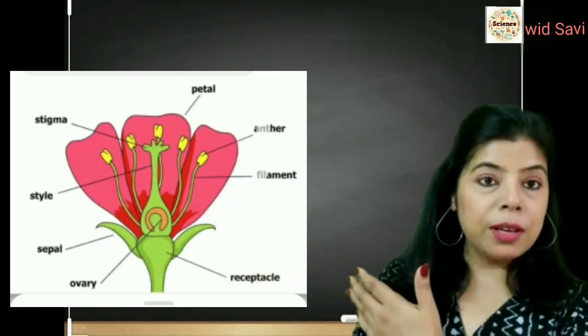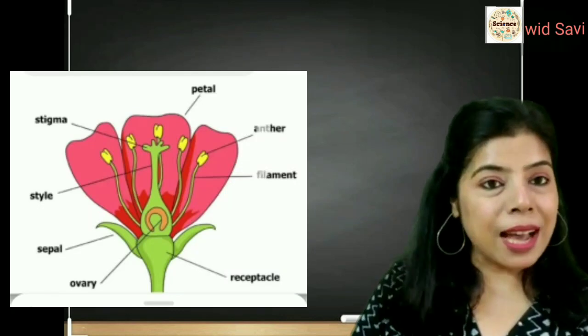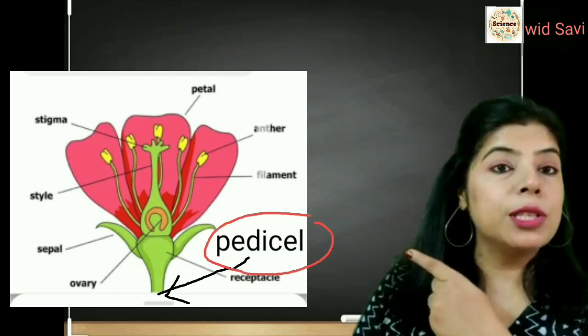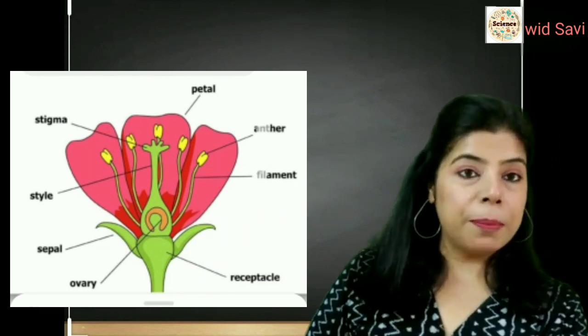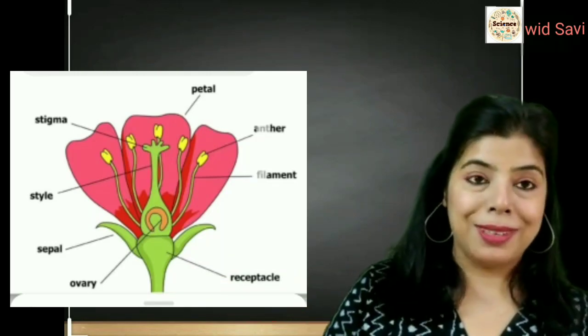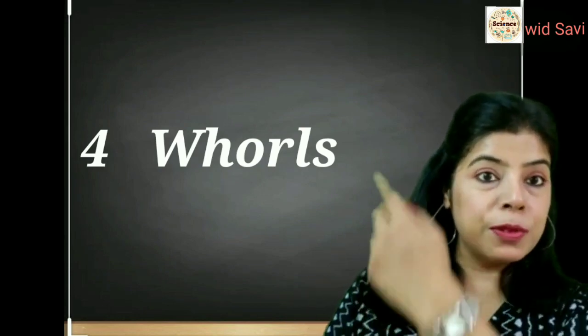Most flowers, like china rose, have the male and female parts in the same flower. For understanding the structure of the flower, I have taken this diagram, which has the male and female reproductive parts in the same flower. The first part of the flower which you see is the pedicel. The pedicel is a small stalk with which the flower is attached. Just above the pedicel, you find the receptacle — it is a swollen part and all the parts of the flower are attached to it. Just above the receptacle come all the parts of the flower, and we can divide the flower parts into four whorls.